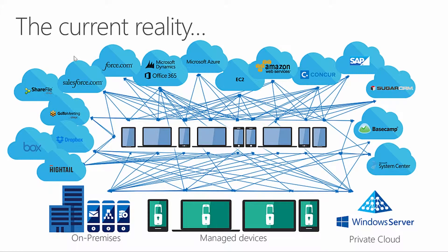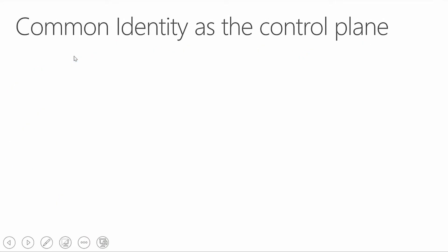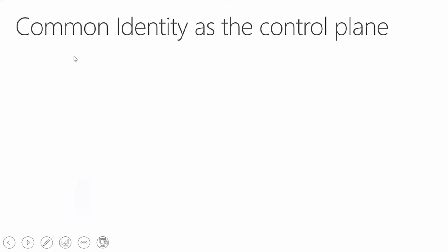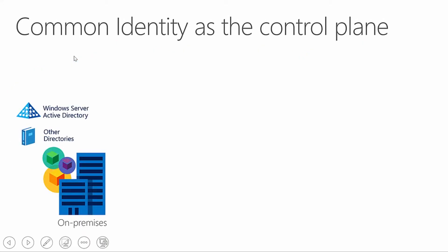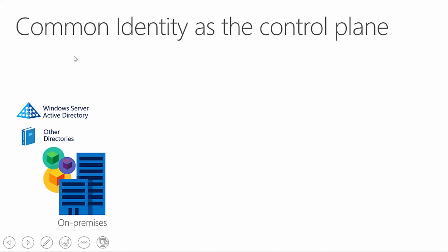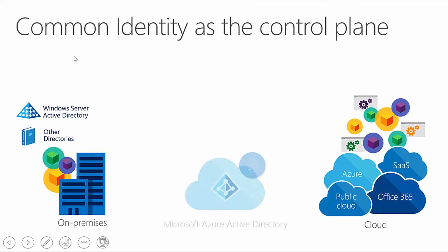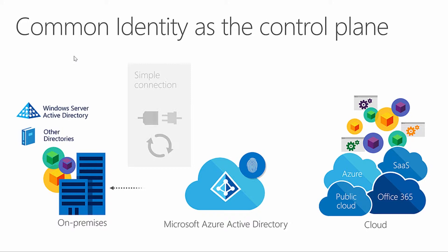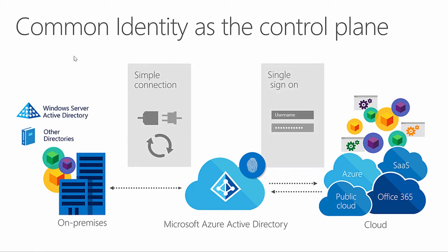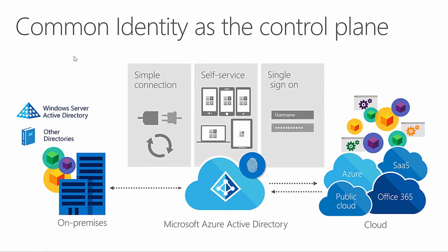We can take our on-premises Active Directory and leverage a tool — which we'll be talking about in just a minute — to sync that identity up to Windows Azure Active Directory. Now that we have that cloud identity, we can use it in unique ways such as triggering multi-factor authentication and providing escalation of credentials.